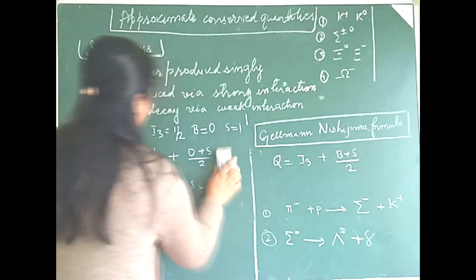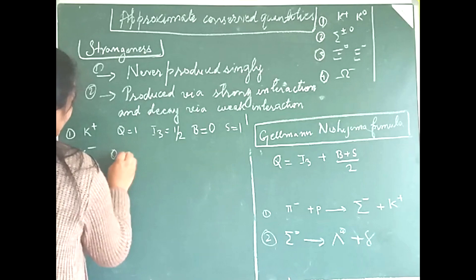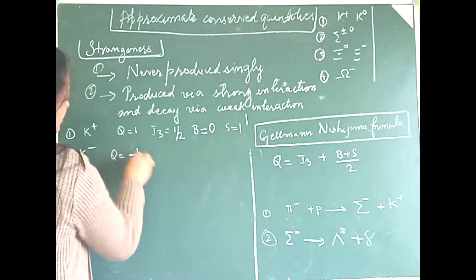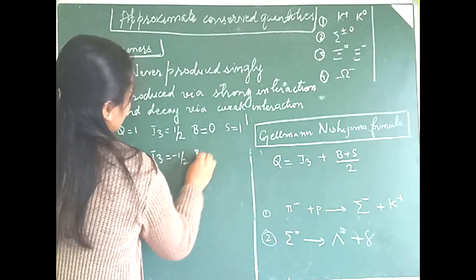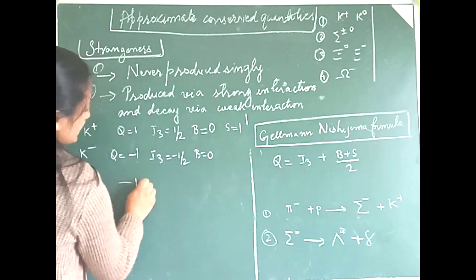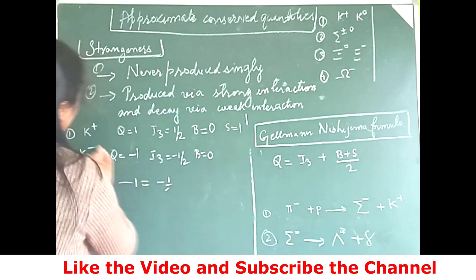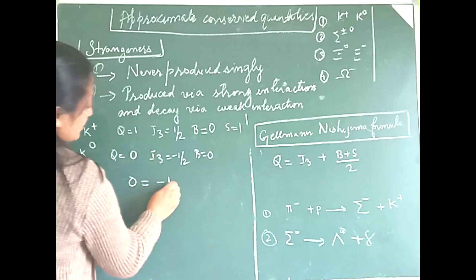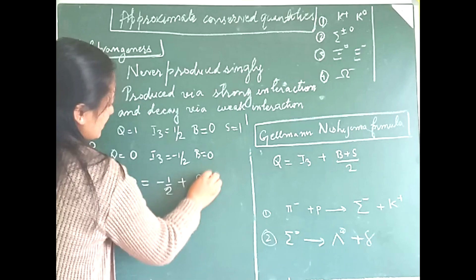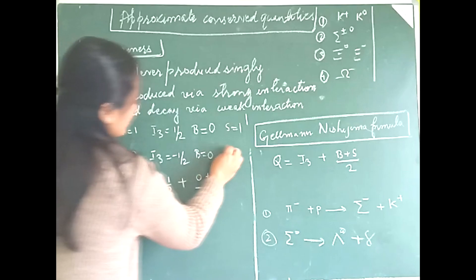For K0: Q = 0, I₃ = −1/2, and since it is a meson, B = 0. Using the formula: 0 = −1/2 + 0 + S/2, which gives S/2 = 1/2, so S = 1. The strangeness for K0 is also one.